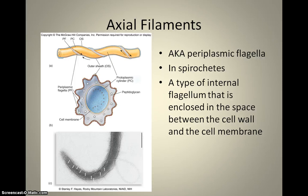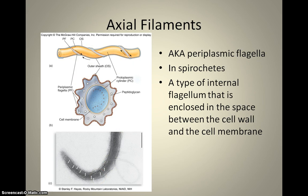Some organisms, specifically spirochetes — which are spiral-shaped bacteria — instead of having a tail-like flagella, have something called axial filaments. This is essentially a flagella that runs down the sides of the body. The whole body is a corkscrew, and it corkscrews through a medium just like a flagella does, but it works as a sort of whole-body flagella.